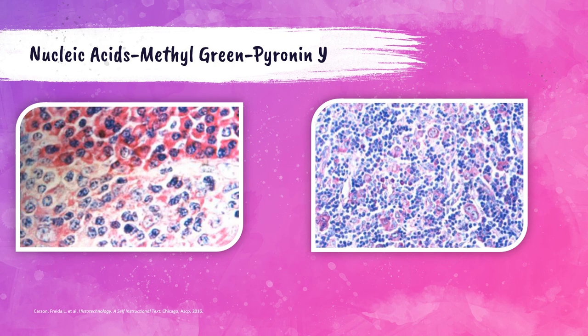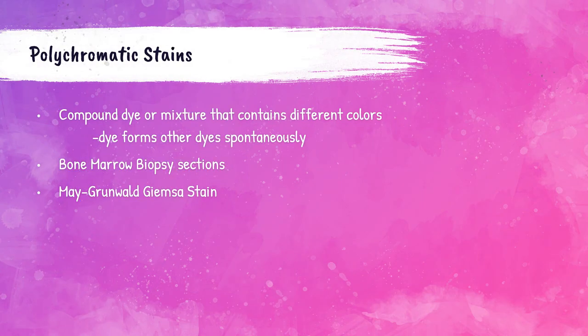Photos show tissues stained with methyl green pyronin Y. The left photo shows the red stain of RNA and the blue-to-greenish staining of DNA with no background staining. The right photo shows RNA and DNA differentiated from each other — RNA in red-rosy color and DNA in blue-to-green. Polychromatic stains contain a compound dye or dye mixture with components of different colors. Polychroming refers to the process by which a dye forms other dyes spontaneously. In some histopathology laboratories, polychromatic stains are used as routine stains for bone marrow biopsy sections.